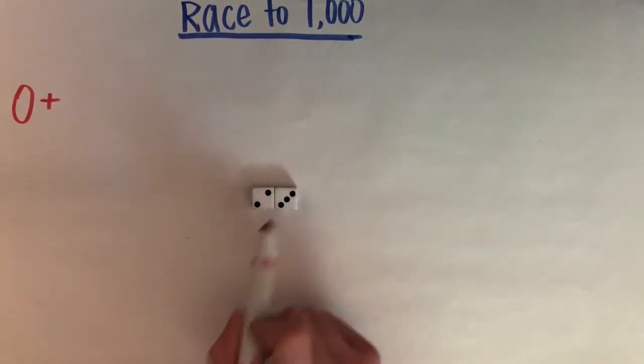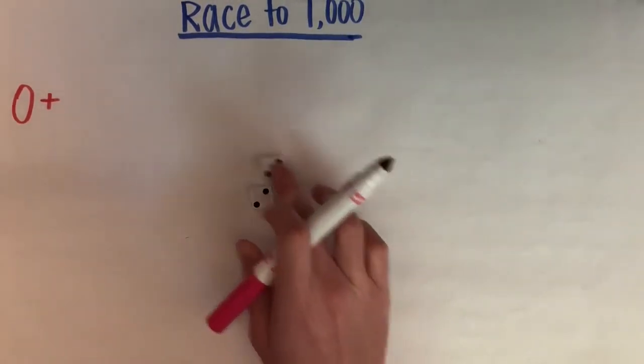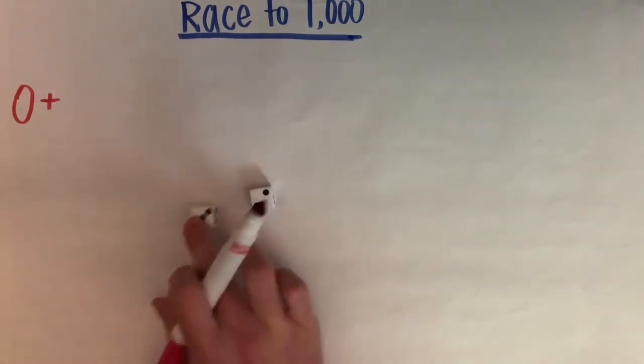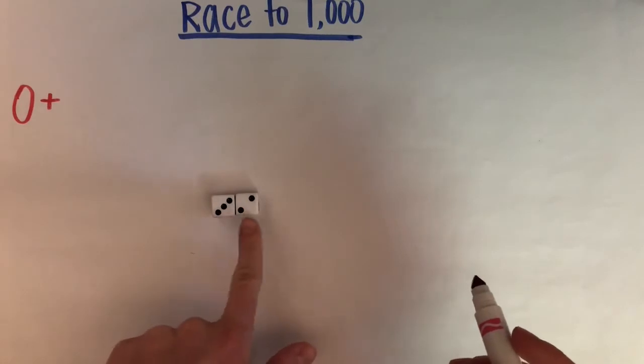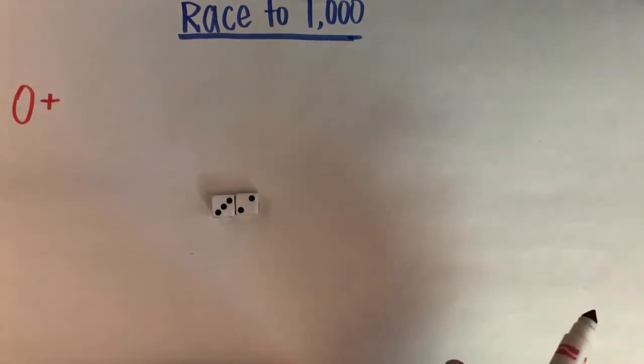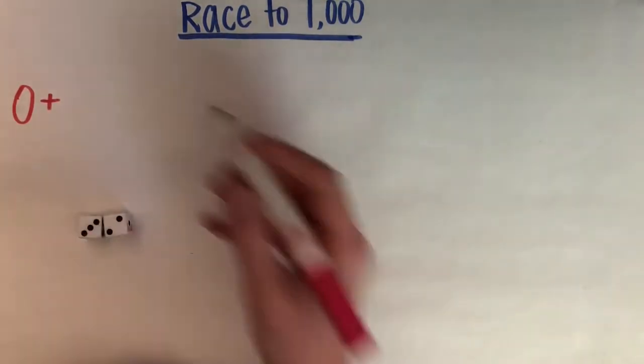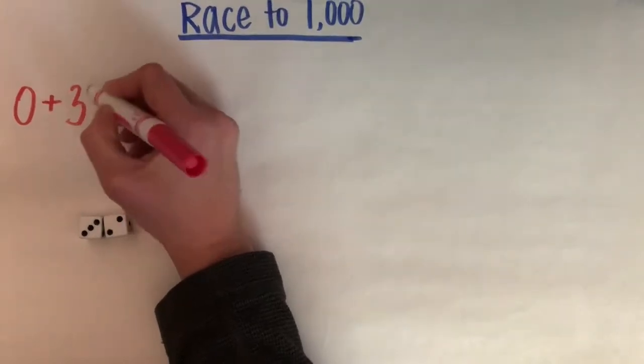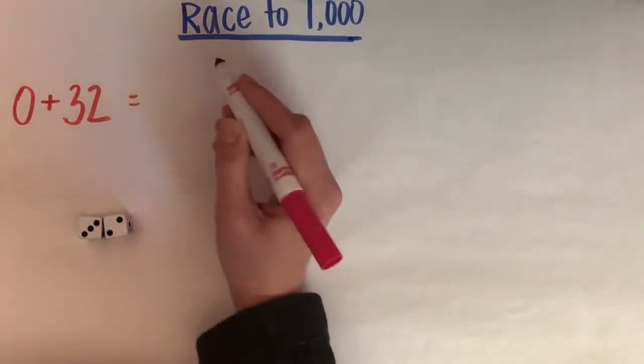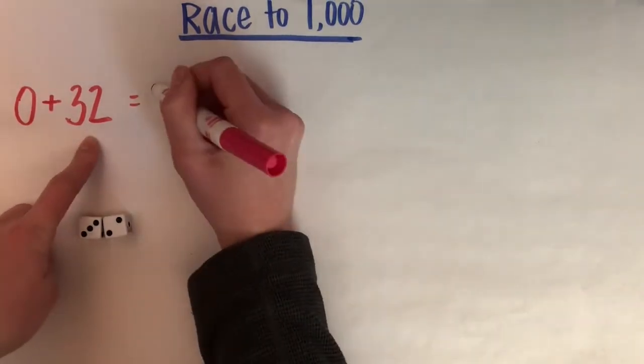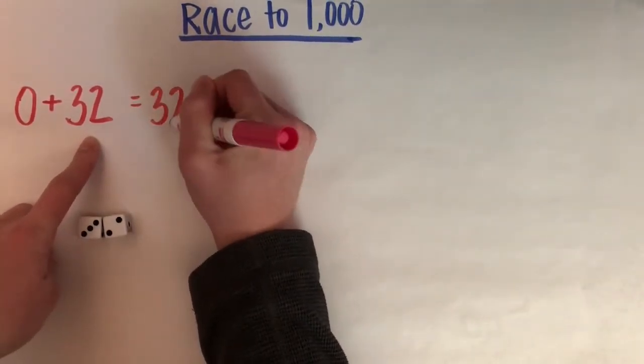So I have 23 or I can make 32. I know in my brain that 32 is bigger or greater than 23. So I'm going to add 32 to my zero. I know that 0 + 32 = 32.